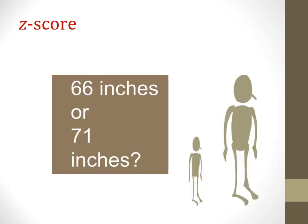Let's consider extreme or unusual z-scores in light of another example — height. Women's height in the U.S. is approximately normally distributed with a mean of 64 inches and a standard deviation of 2.56 inches. Imagine you walk into a room of women and you see one woman who is 66 inches tall and another who is 71 inches tall. Which woman are you more likely to take note of — the one that's 66 inches or the one that's 71 inches?